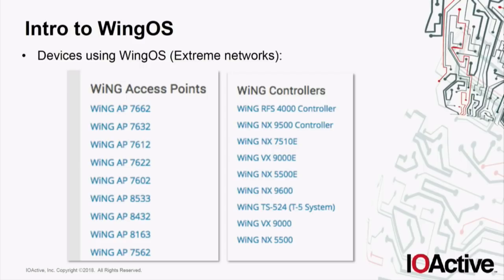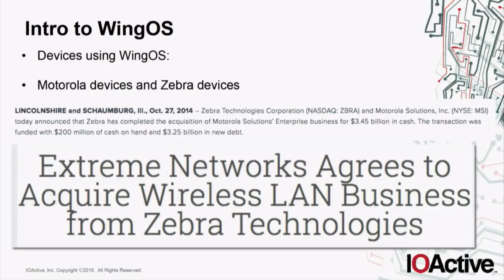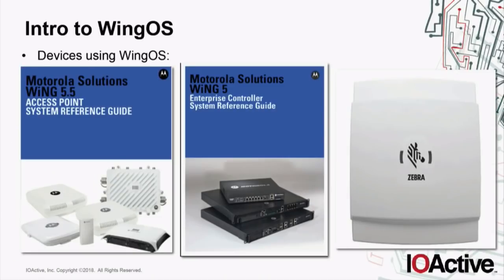For devices using Wing OS, I didn't get an official list of affected devices, but based on public information from the Extreme Networks website we can see a list of Wing access points and controllers. We also have Motorola devices and Zebra devices, because Motorola created this OS, then Zebra bought that part of the business from Motorola, and then Extreme Networks bought it from Zebra. So we have Motorola access points, Motorola controllers, Zebra devices, and Extreme Networks devices all running this operating system.